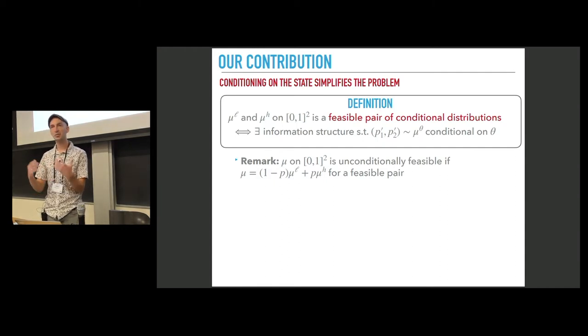So what happens is that surprisingly if you give me an unconditional distribution and ask me whether it is feasible, it's a hard question. But if you ask the same question about the pair, this question becomes simple. And the way it is possible that one question is hard and another simple is because if you are given an unconditional distribution, you can consider all possible decomposition of this unconditional distribution as a pair, as a convex combination of two conditional distributions.